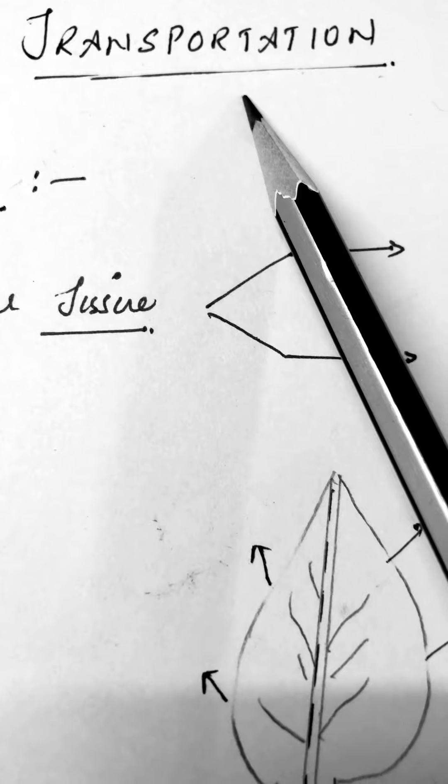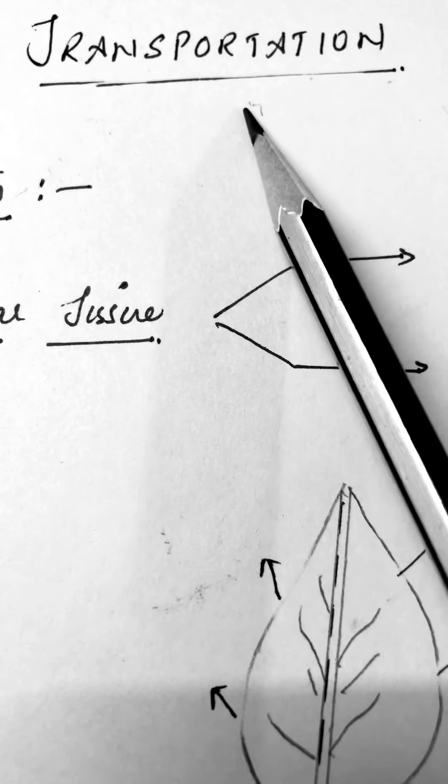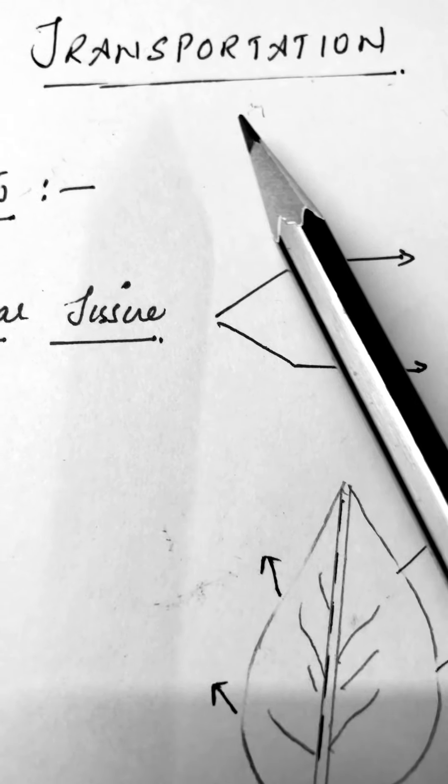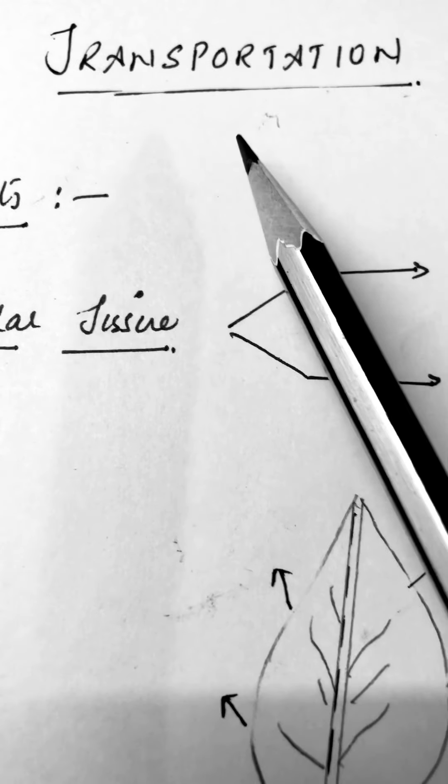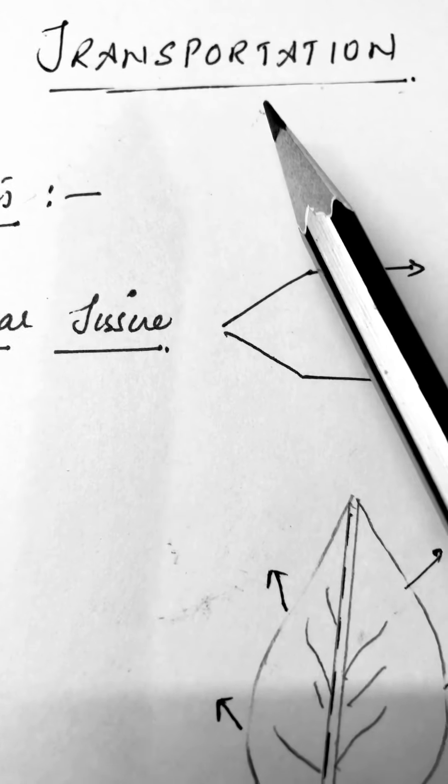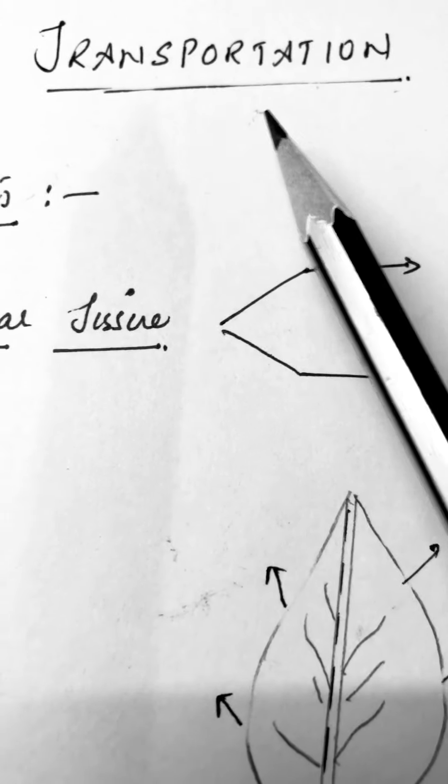As the word itself signifies, its meaning is the movement of substances from one part of the organism to another. In multicellular organisms, whether plants or animals, transportation is extremely essential. We are going to begin with transportation in plants first.